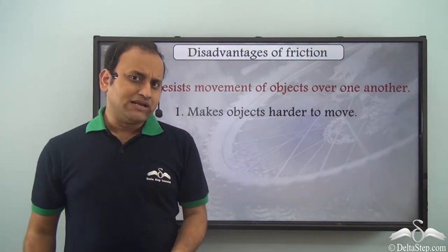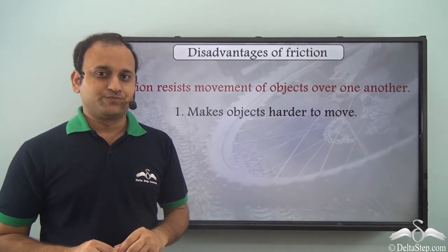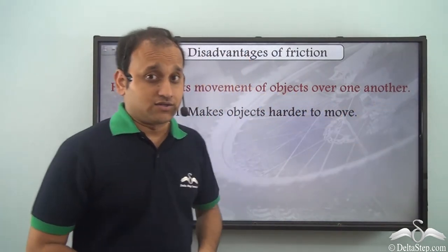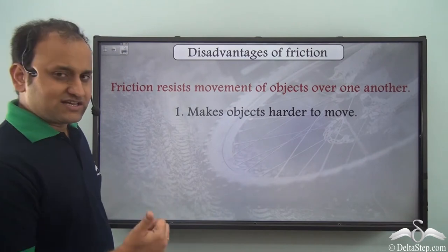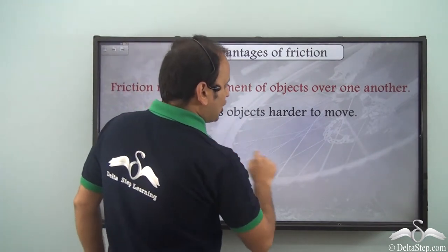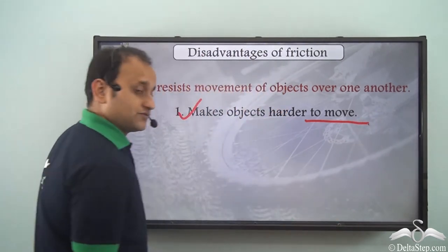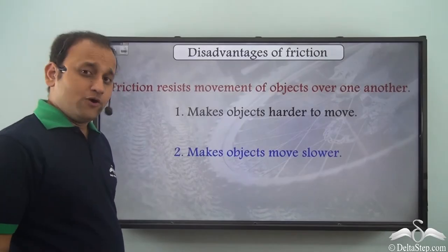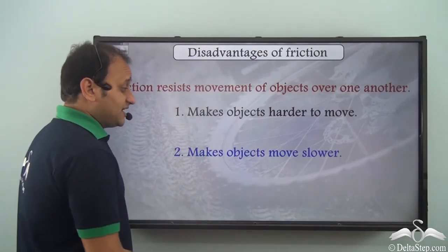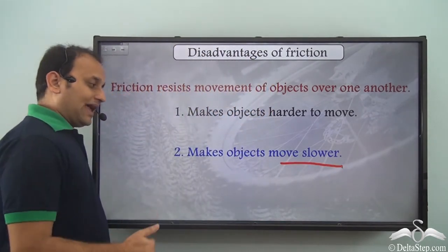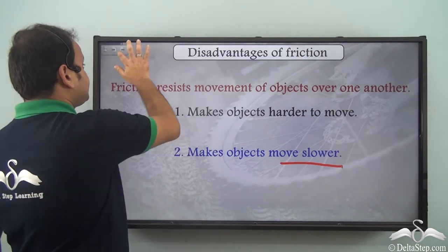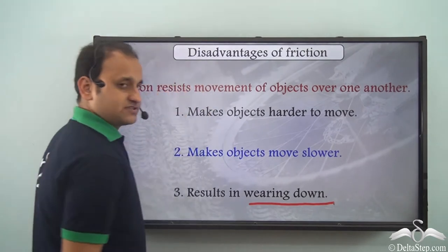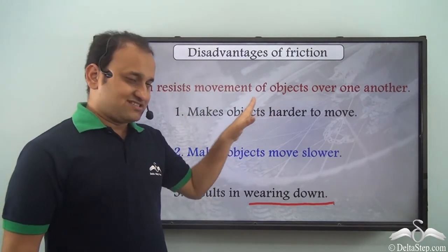Not only positives — friction has some disadvantages too. Friction resists movement of objects over one another, making objects harder to move. Because of this same reason, it also makes objects move slower. And there is another disadvantage: friction results in wearing down of things. So because of friction we face these three disadvantages.